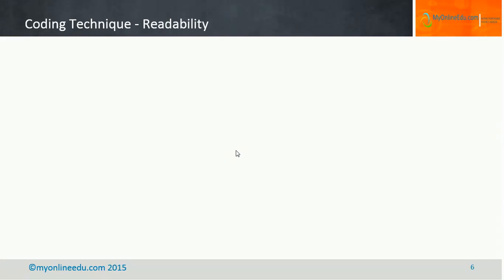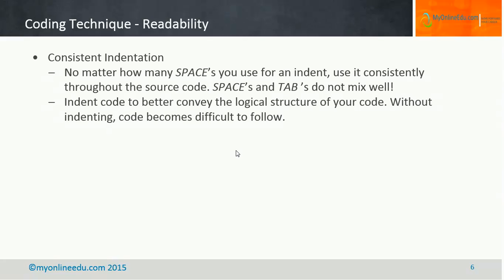The first aspect of coding technique is readability. Readability means that once you or someone else reads a particular piece of code, the code should be understandable. If someone is working on your developed code to fix a bug, they will find it very difficult to understand what the code is doing if it is not readable. So readability is a very important aspect of following best practices.